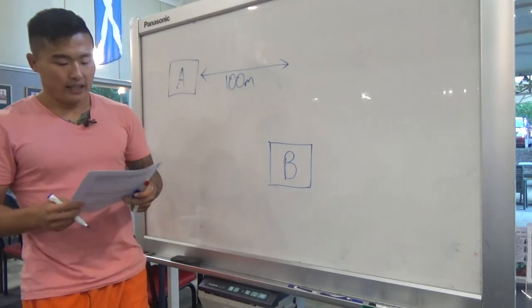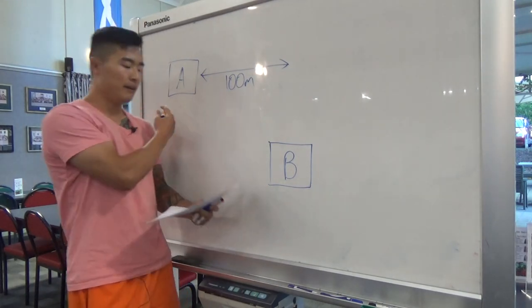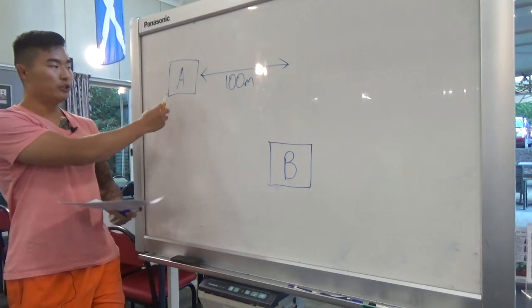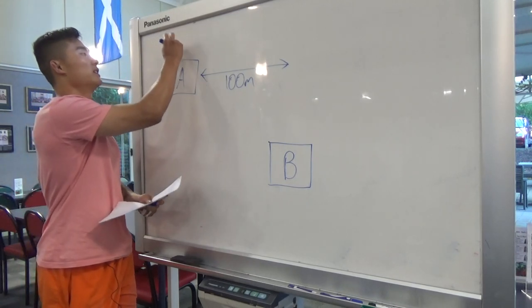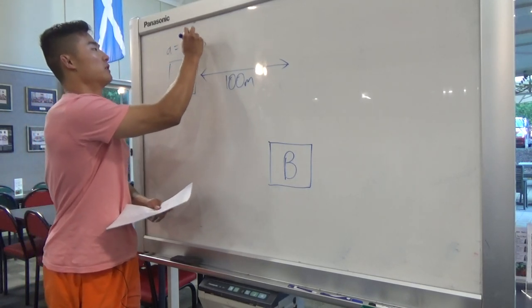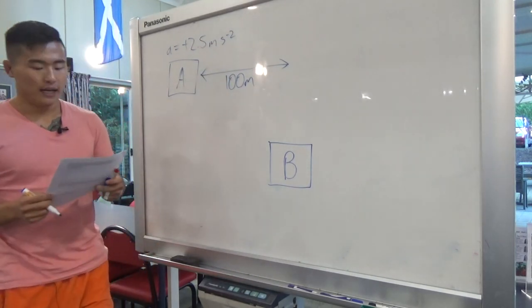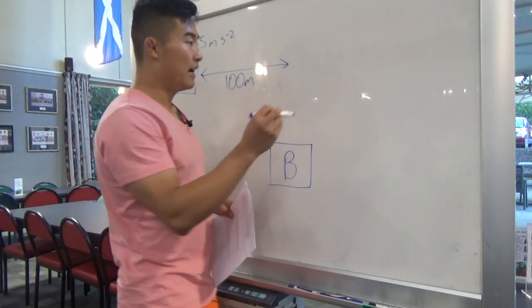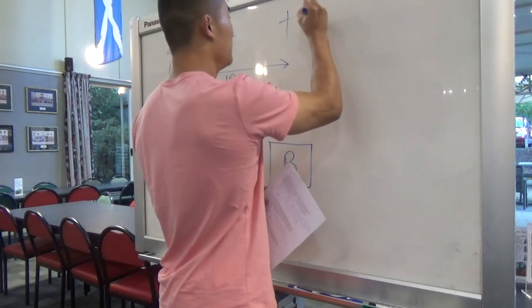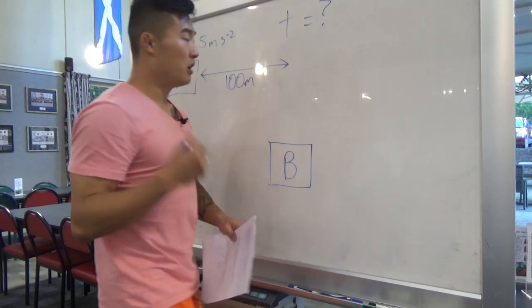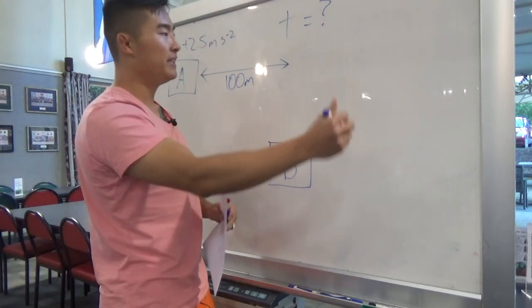Car B maintains a constant velocity, while car A begins to accelerate at 2.5 meters per second squared. You want to find out how long — so that's time — it'll take for car A to catch up to car B.